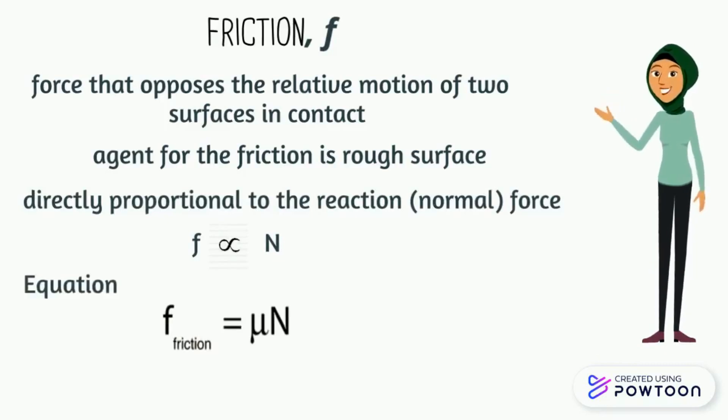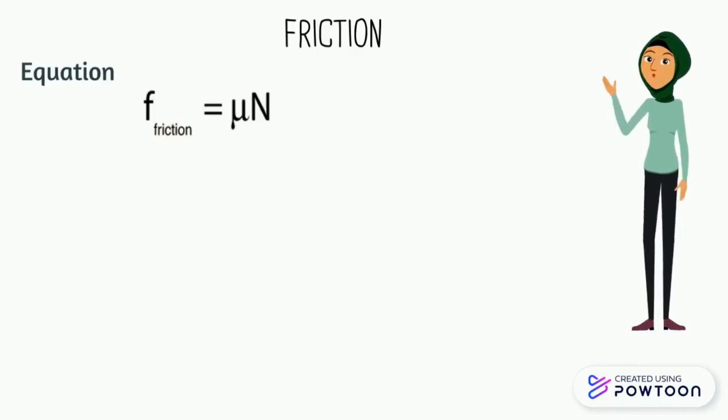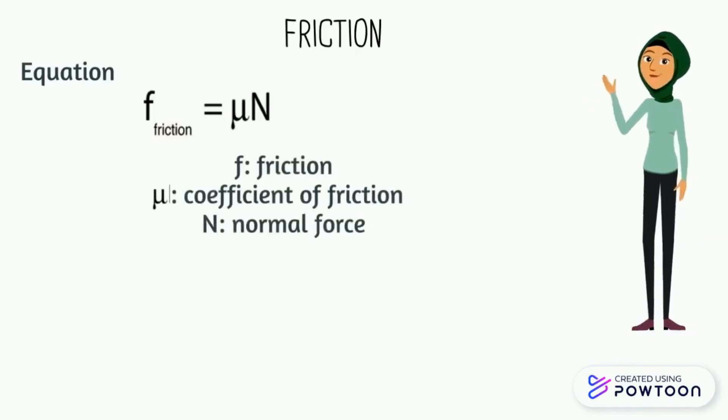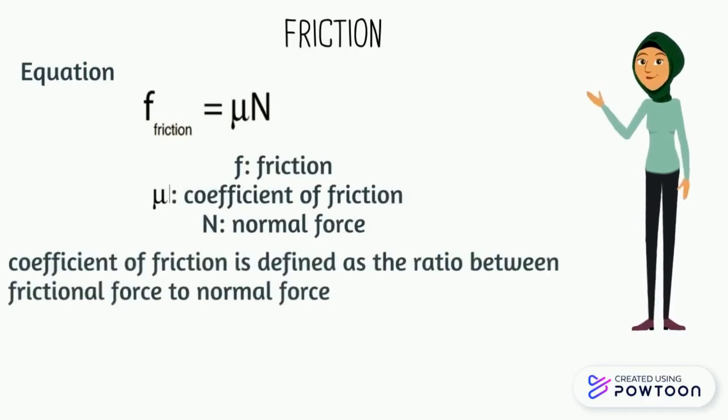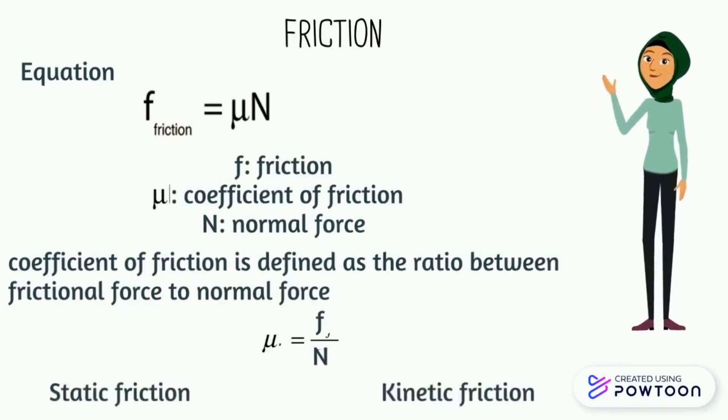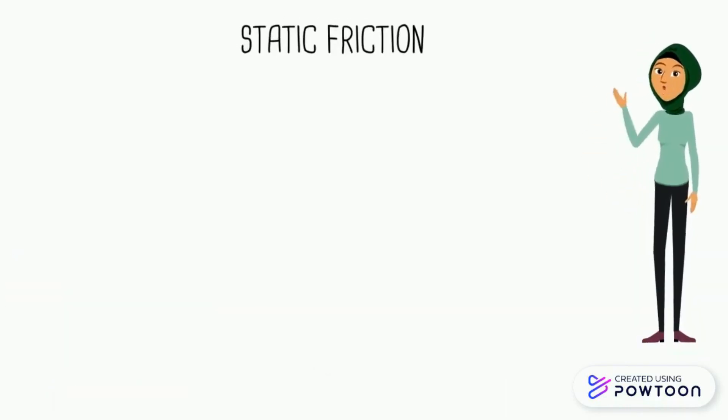The coefficient of friction can be defined as the ratio between friction to normal force. There are two types of friction: static friction and kinetic friction.